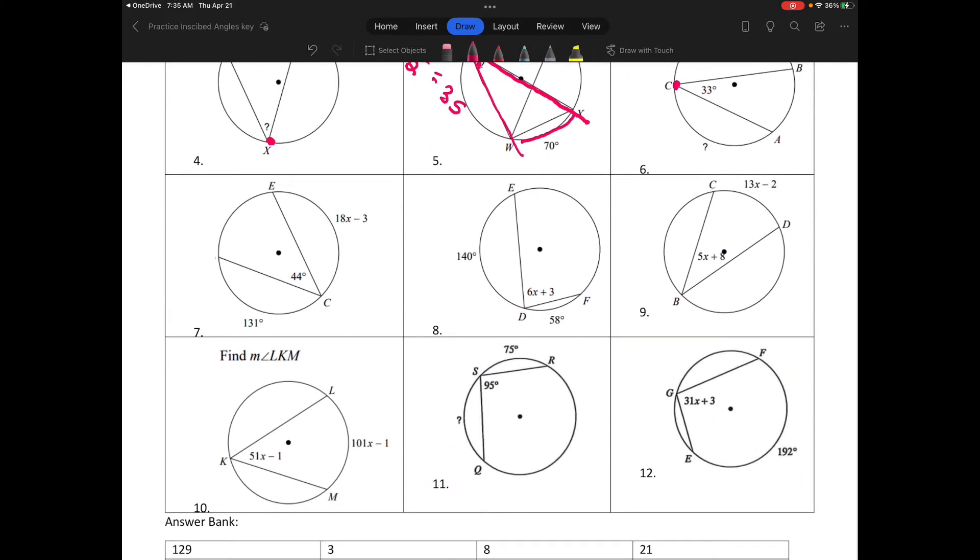Let's look at number eight. We're told that this angle is 6x plus 3. Its intercepted arc is here, so in order to find x I need to know what this arc is. I'm not told, but I do know that the arc of the entire circle measures 360. So to find this missing part I would do 360 minus 140 minus 58. That's equal to 162.